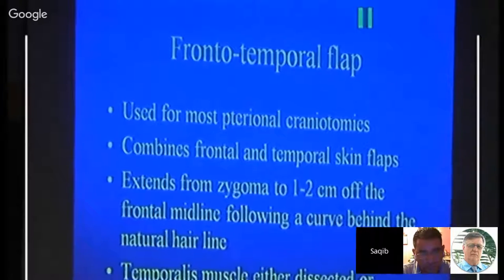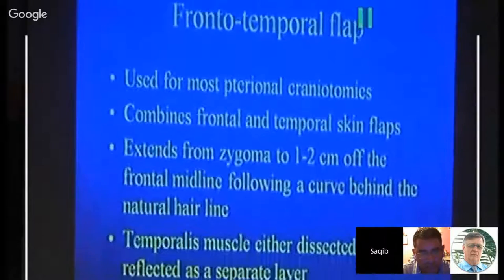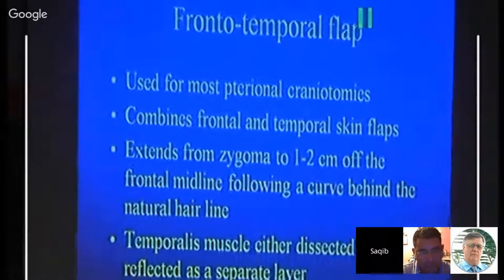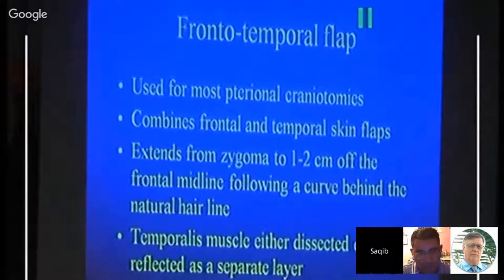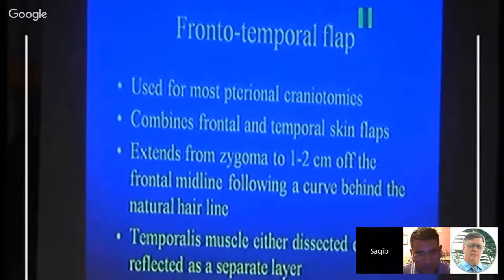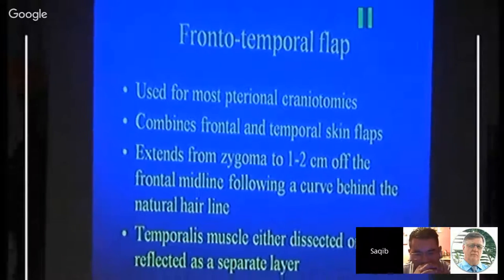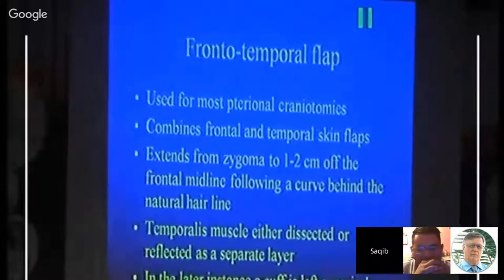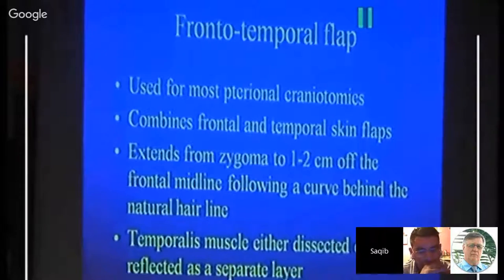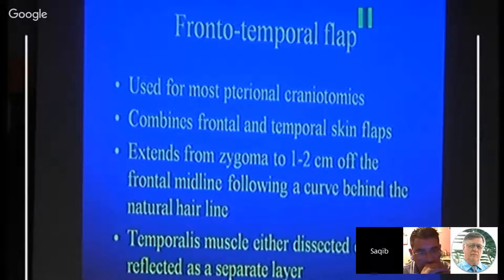The frontotemporal flap is used for most pterional craniotomies. It combines frontal and temporal skin flaps extending from the zygoma to one to two centimeters from the frontal midline, following a curve behind the natural hairline. The temporalis muscle is either dissected or reflected as a separate layer. If it is separated, a cuff should be left on the bone so that it can be stitched back.